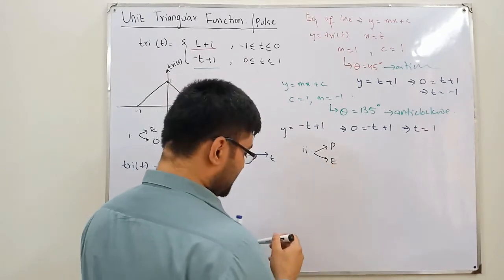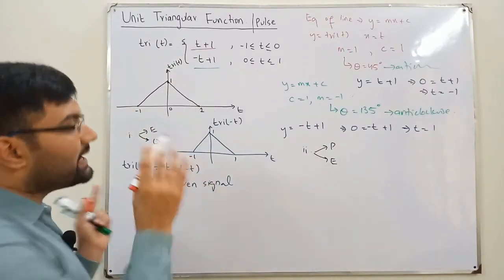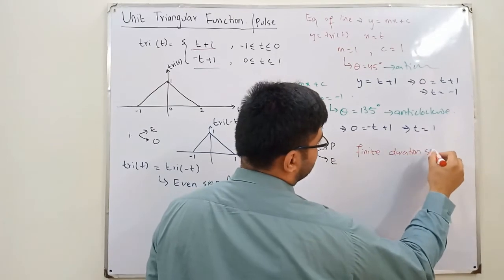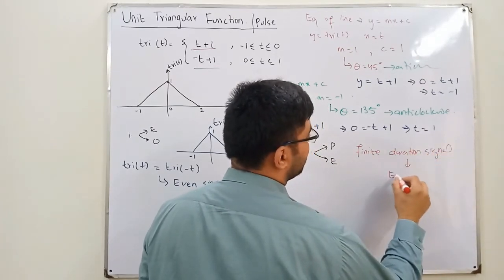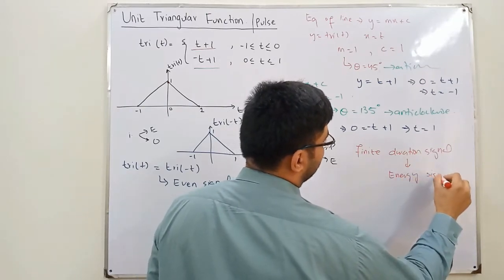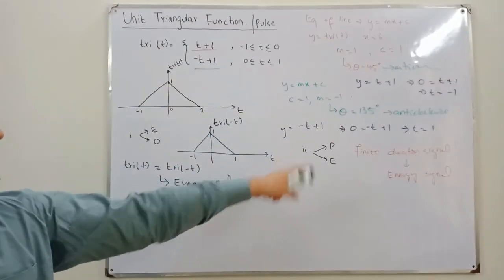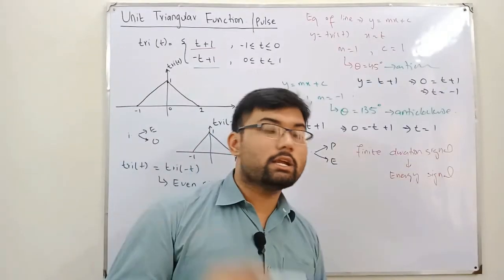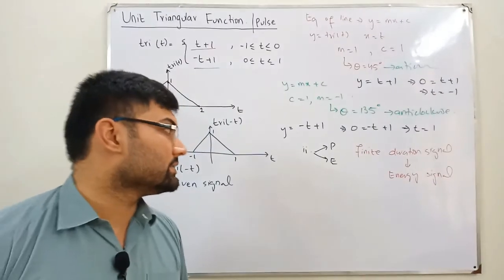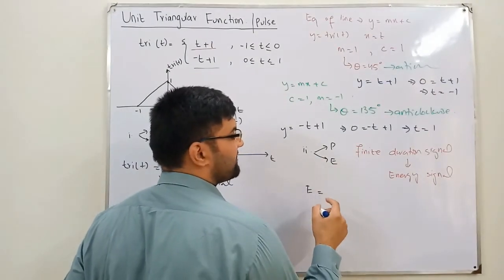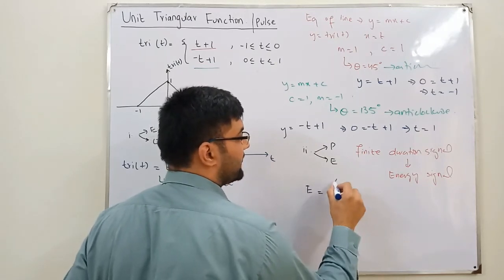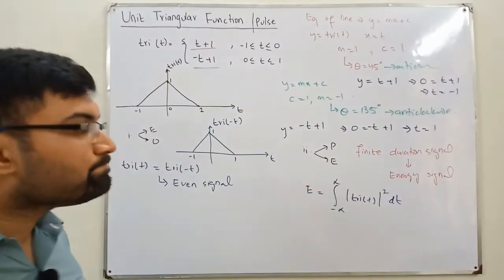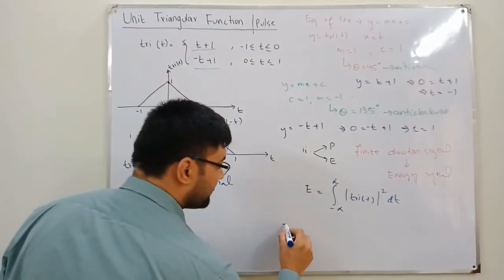Next, let's check whether this is a power signal or an energy signal. This is a finite duration signal, so it is an energy signal. For an MCQ you can state that directly. But for a formal solution, you must use the formula: the energy of a signal equals the integral from negative infinity to infinity of the modulus of the function squared, integrated with respect to t.